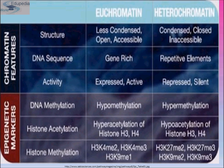Epigenetic markers such as DNA methylation — which means the addition of a methyl group to the DNA strand — differ between the two forms. Euchromatin is a hypomethylated form, meaning very few methyl groups are added to that structure. On the contrary, heterochromatin represents hypermethylation sites, meaning more and more methyl groups attach to it.